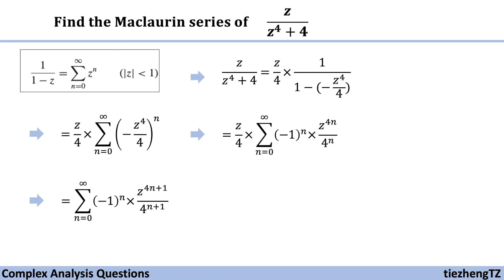So in our case the modulus of z to the power of 4 over 4 should be less than 1. So we have z modulus should be less than square root 2.